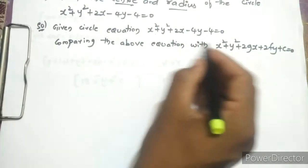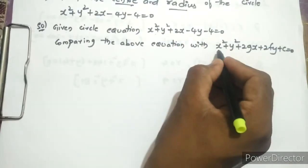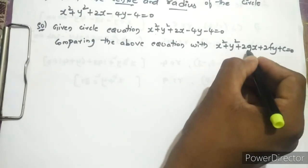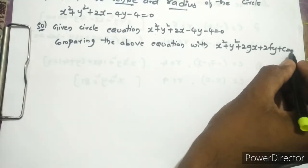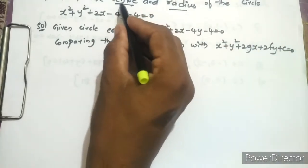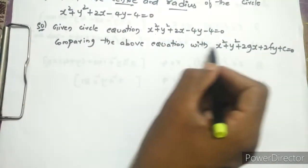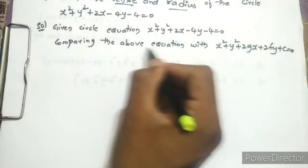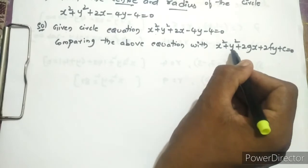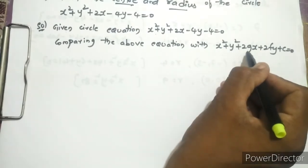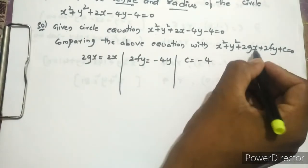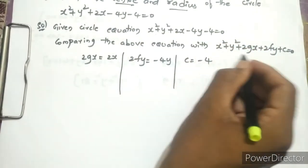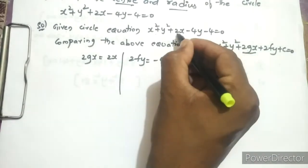We are comparing this circle equation with our general circle equation, that is x² + y² + 2gx + 2fy + c = 0. For finding the center and radius, we are using this general equation.